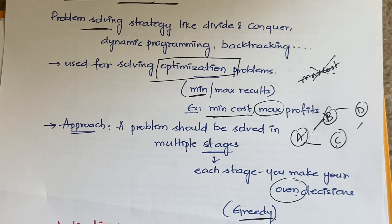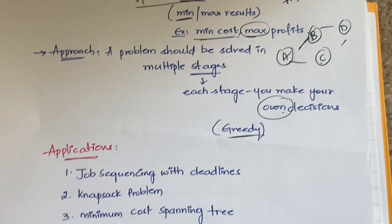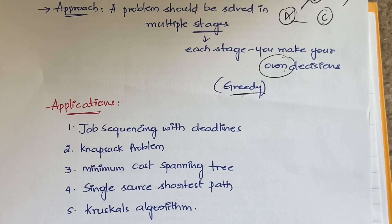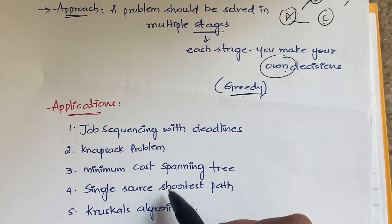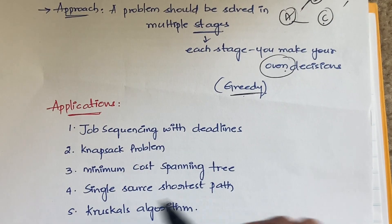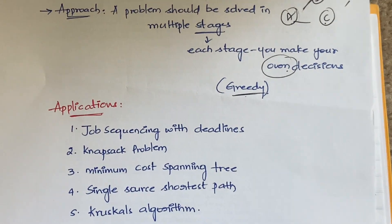This might sound a little theoretical right now, but you'll understand it well through examples. We have different algorithms in this topic: job sequencing with deadlines, the knapsack problem, minimum cost spanning tree, the single source shortest path problem, and also Kruskal's algorithm.